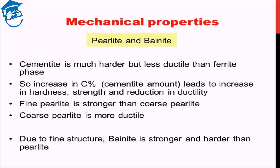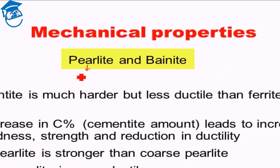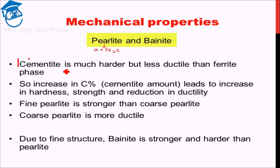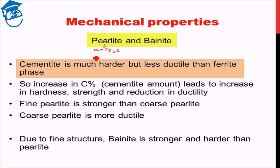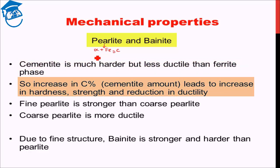To begin with, let's discuss pearlite and bainite. Pearlite, just to remind you, is ferrite plus cementite. Cementite is a very hard phase — in fact, it is the hardest phase possible in a steel system and one of the hardest phases available in nature. But cementite is much less ductile than ferrite. Ferrite, on the other hand, is a very soft phase but is highly ductile. Thereby, if we increase the percentage of carbon, the amount of cementite increases, leading to an increase in hardness and strength of the pearlite, but the ductility of pearlite decreases.